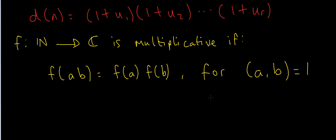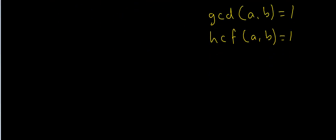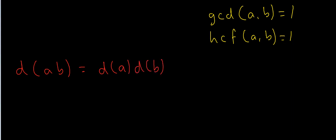This is the same as saying gcd(a, b) = 1, or in the UK notation, the highest common factor of a and b equals 1. So to prove that the divisor function d(n) is multiplicative, we have to show that d(ab) = d(a) times d(b) for natural numbers a and b.